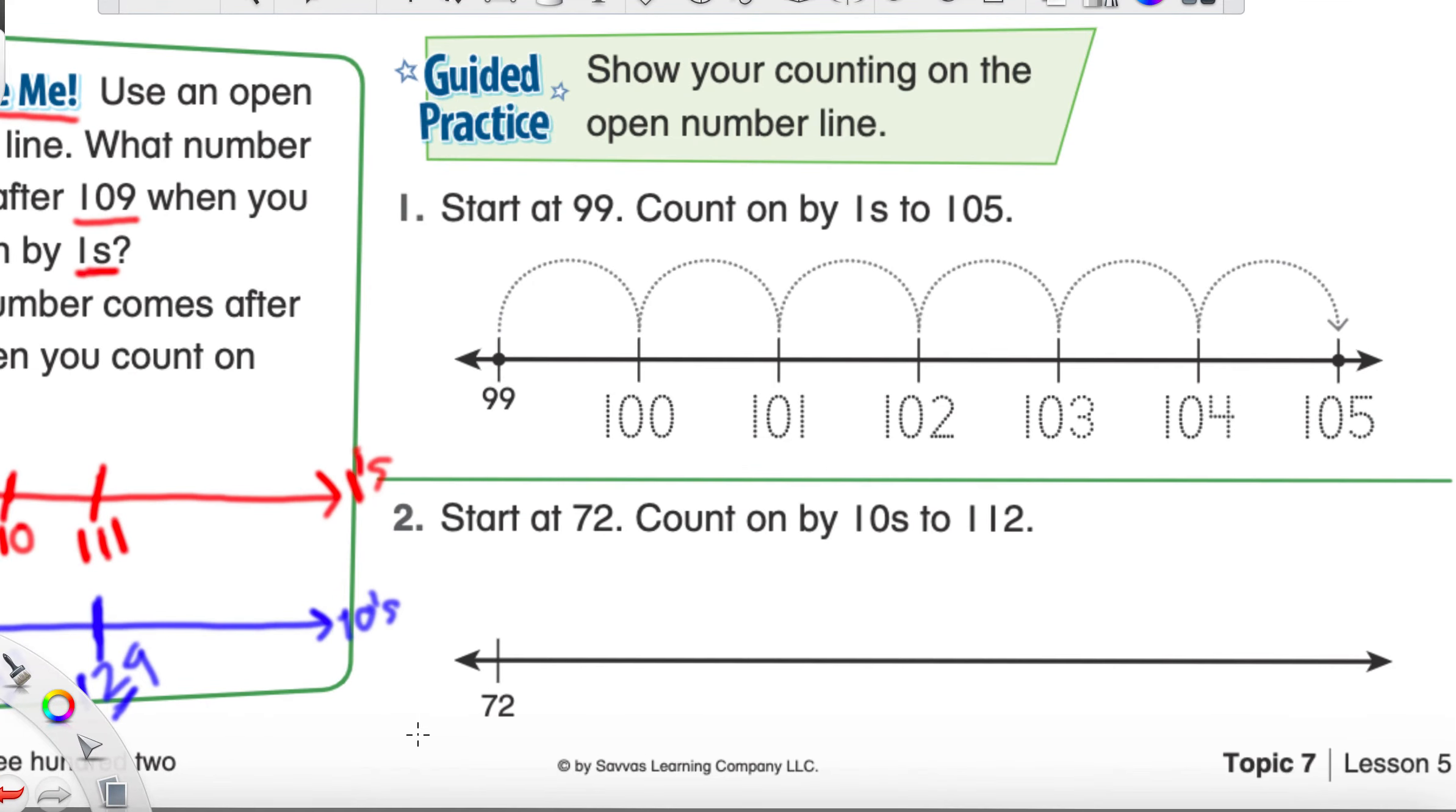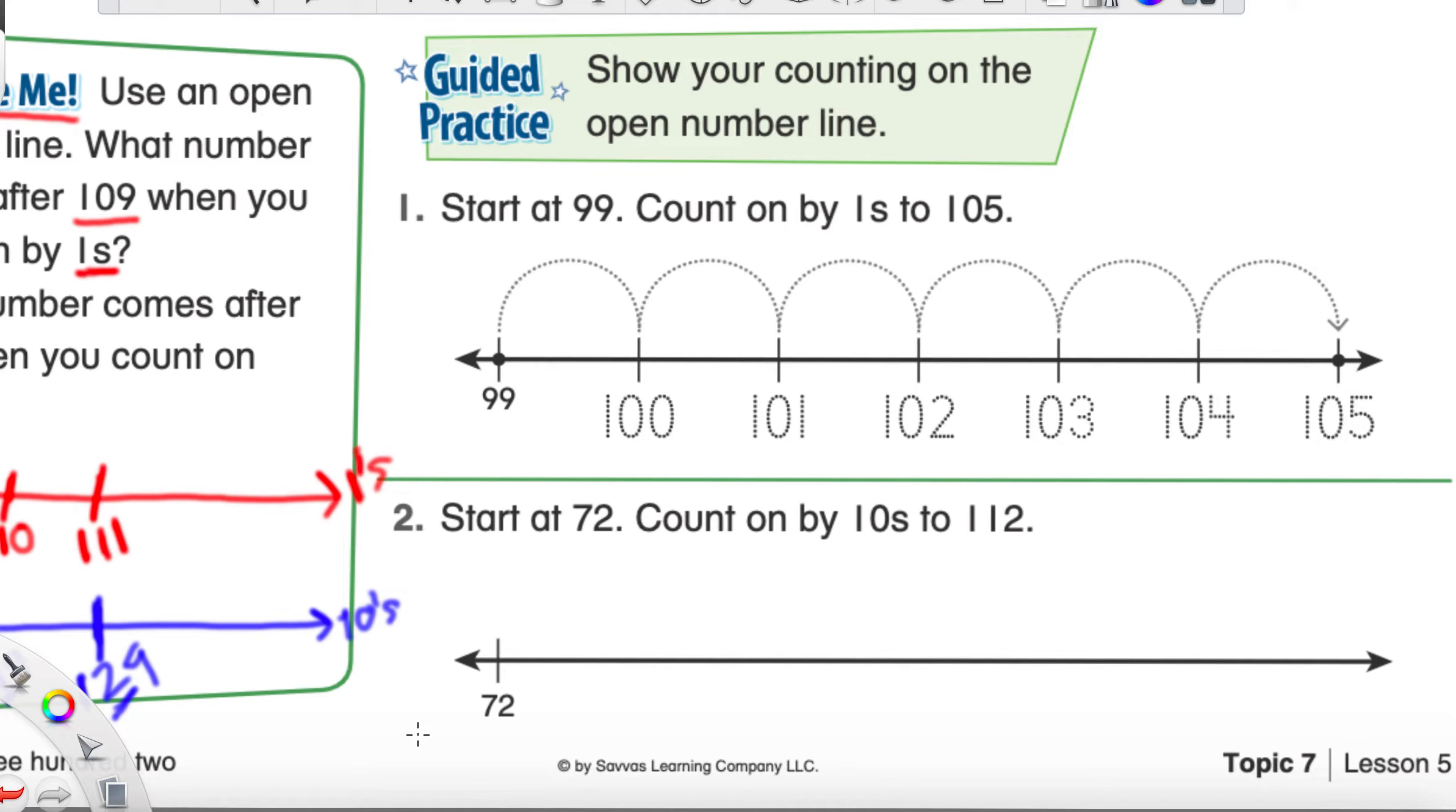So, they kind of have number one done for us. I'm just going to walk through it very quickly. So, they want us to start at number 99 and count on by ones to the number 105. So, what they did was they made some tally marks here, right? We just traced over these.